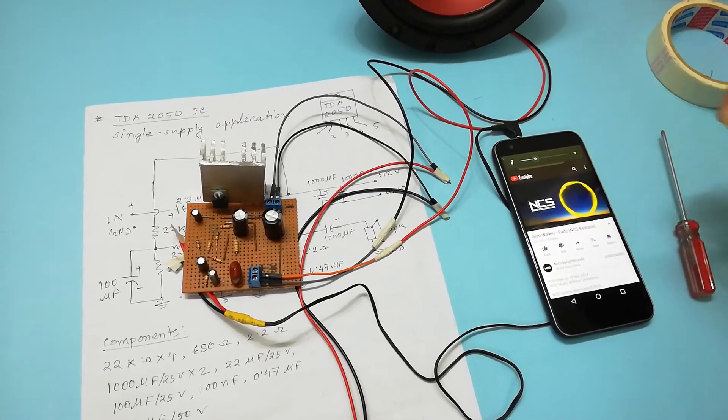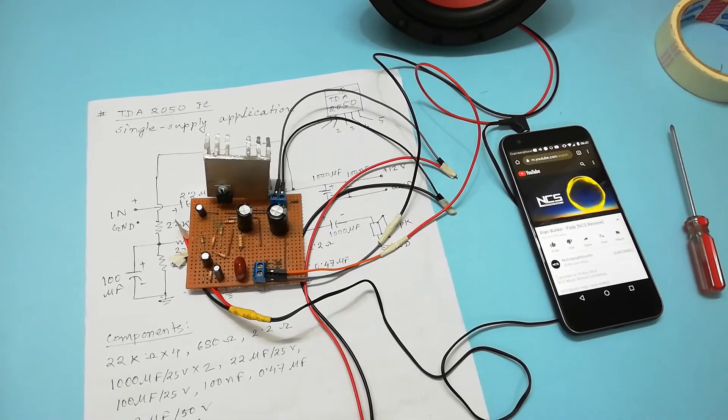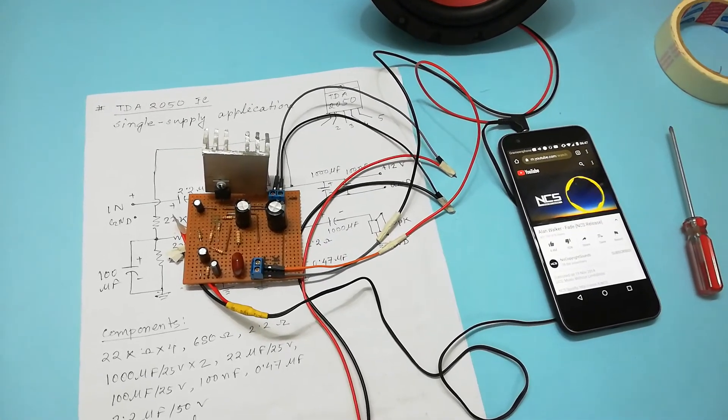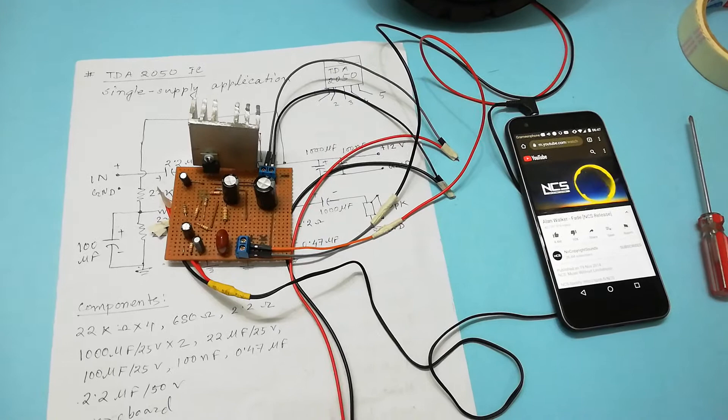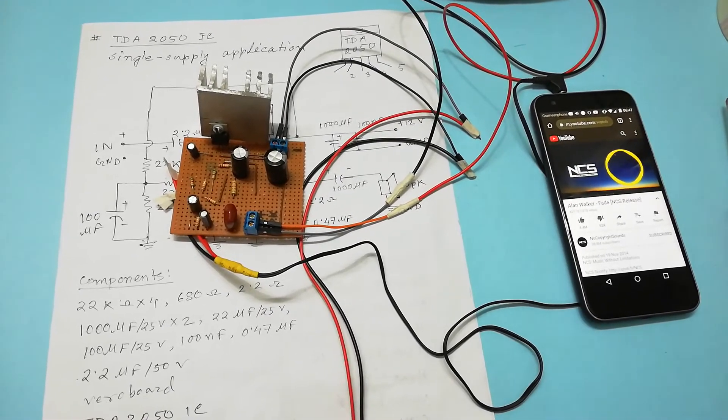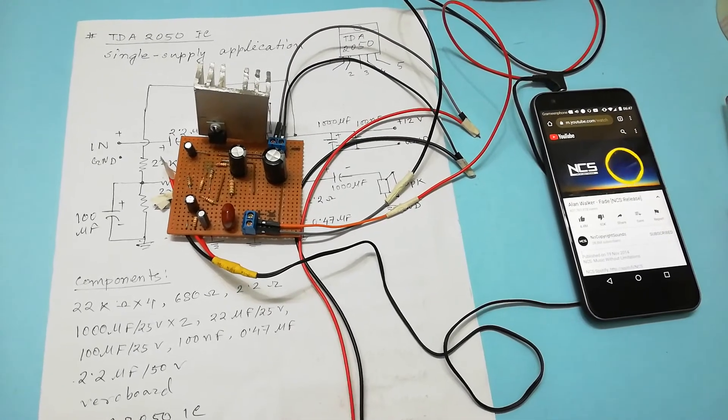In breadboard we can set up an amplifier but we cannot construct it as a permanent one, but if we want to make it as a finished product or permanent one either we'll have to solder it into the Vero board or in the PCB or printed circuit board.